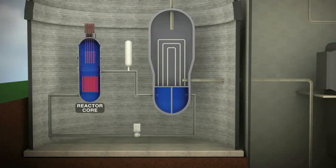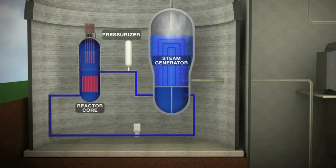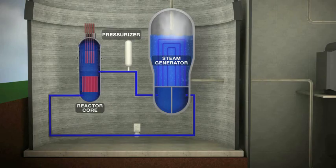In a pressurized water reactor, the heat from the water surrounding the nuclear fuel is kept under pressure to prevent it from boiling. The hot water is piped from the reactor vessel to a steam generator, where it transfers its heat to boil water and makes steam in a second system.